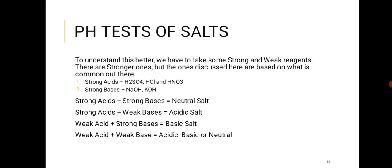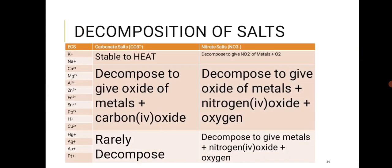Strong bases include NaOH, KOH, NH3, and CH3NH2. A strong acid with a strong base gives a neutral salt. A strong acid with a weak base gives an acidic salt. A weak acid with a strong base gives a basic salt. For example, potassium carbonate: potassium comes from a strong base, carbonate from a weak acid — so it is a basic salt.